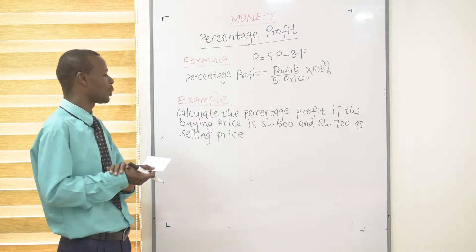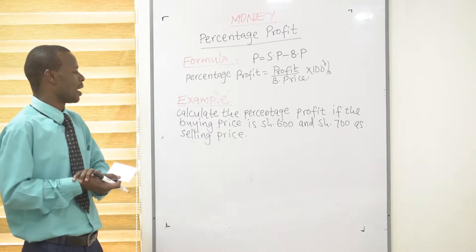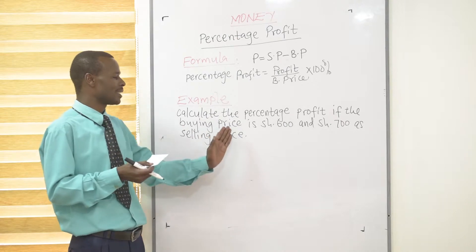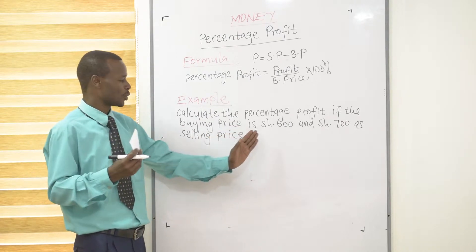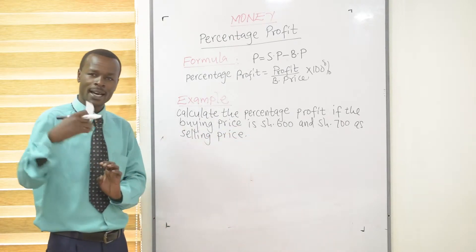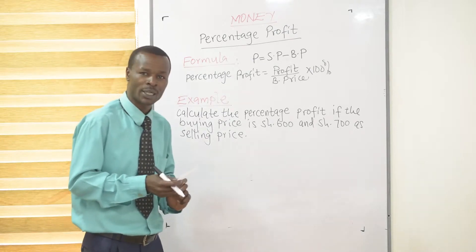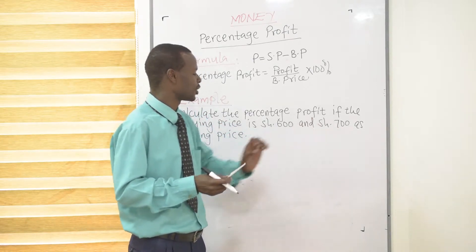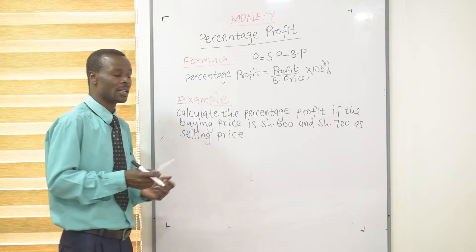You are asked to calculate the percentage profit if the buying price originally was 600 shillings. Then later on, when that item is sold, it's sold at 700 shillings as the selling price.